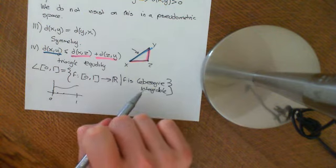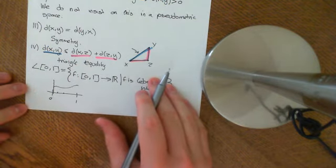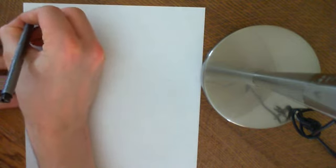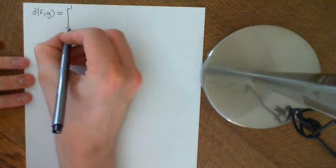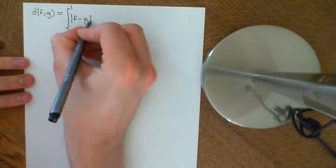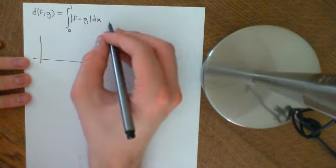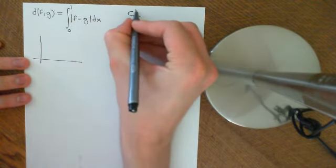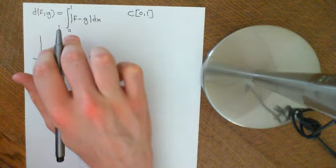So L(0,1) is the set of all functions from the interval 0 to 1 onto the real line such that F is Lebesgue integrable. We want to discuss why this forms a pseudometric space, and the metric we'll use is: the distance between any function F and any function G equals the integral from 0 to 1 of the modulus of F minus G. This looks very similar to a problem done earlier with continuous functions on C(0,1) using the same metric, which formed a full metric space.